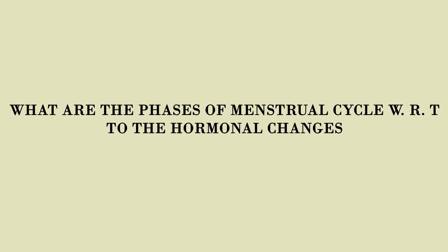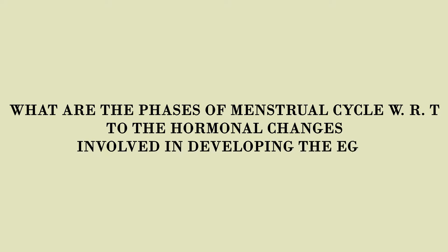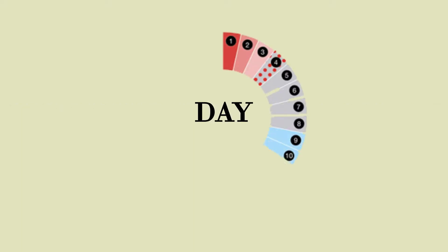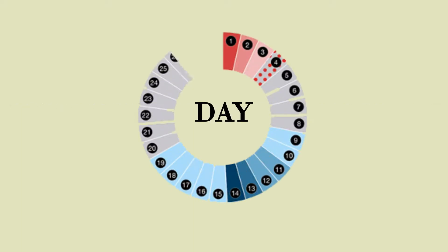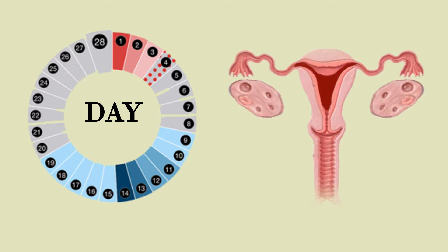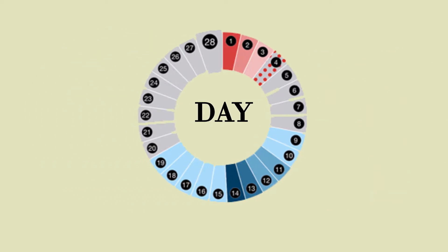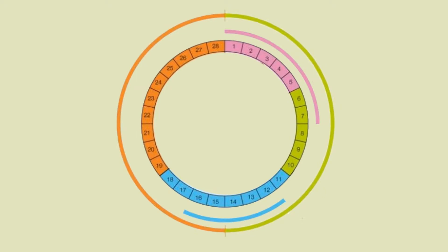What are the phases of the menstrual cycle with respect to the hormonal changes involved in developing the egg? The day count for the menstrual cycle begins on the first day of menstruation, when blood starts to come out of the vagina. The length of the menstrual cycle on an average is 28 days. The entire duration of a menstrual cycle is divided into 4 main phases.